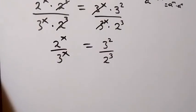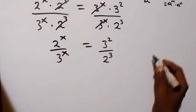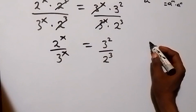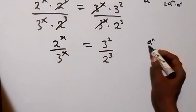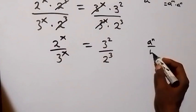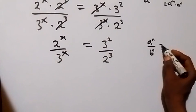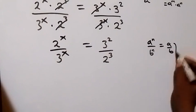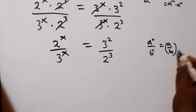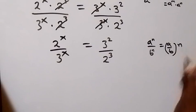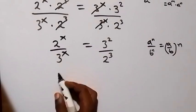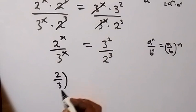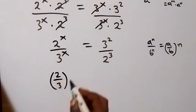And from here, when we have a raised to power n over b raised to power n, from the law of indices this is the same thing as a over b, raised to power n. So we can apply that here, and this will be 2 over 3, raised to power x.